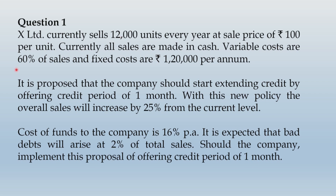Under the proposed volume, rupees 60 per unit multiplied by 15,000 units gives rupees 9 lakhs as variable cost. Remember, variable cost will vary with sales — as sales increase, variable cost increases accordingly. Fixed cost, however, will remain the same in both present and proposed columns at rupees 1,20,000.